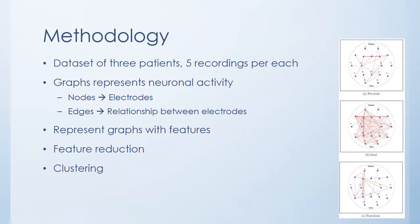During the seizure times, we can see many relationships between electrodes. But in both pre-ictal and post-ictal times, the relationships are quite weak. After calculating graphs per each frame, I calculate 27 features per each graph. Then I represent graphs with these features.